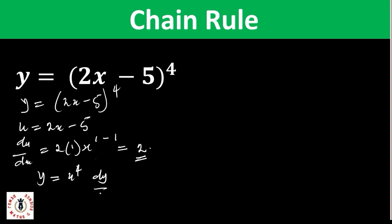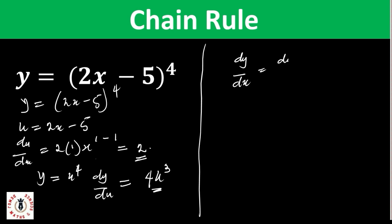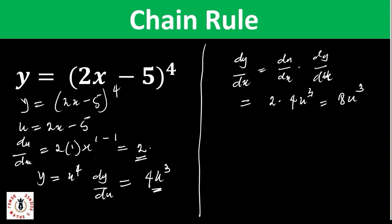So dy/du = 4u^3. Remember that dy/dx = du/dx times dy/du = 2 × 4u^3. Substituting back, u = 2x - 5, so dy/dx = 8(2x - 5)^3.